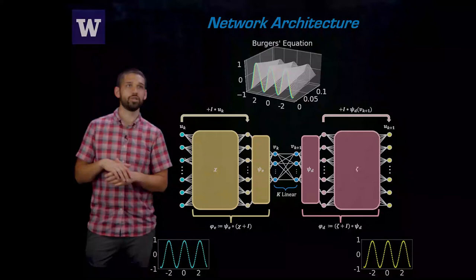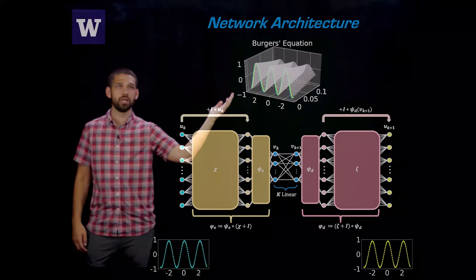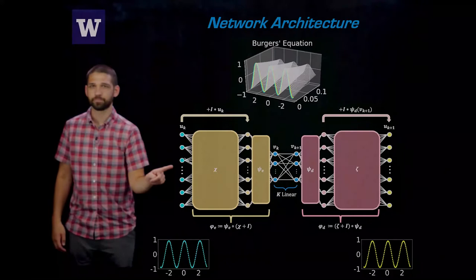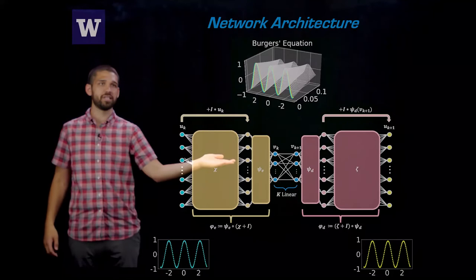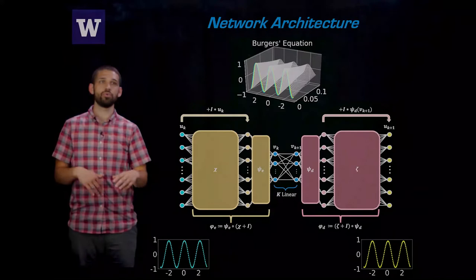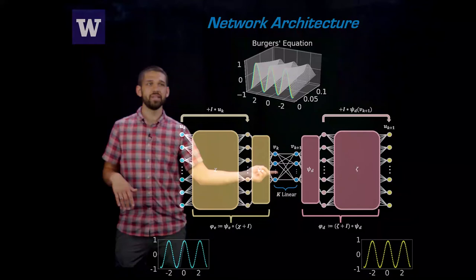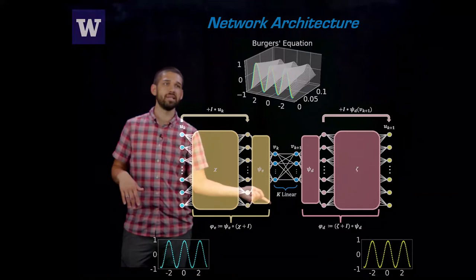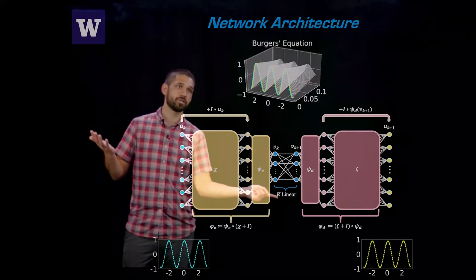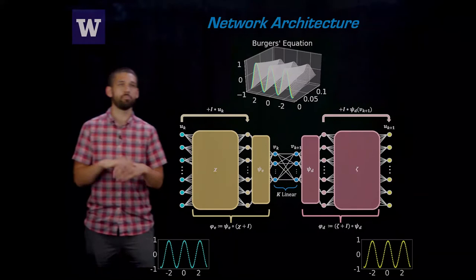So here's our network architecture. What we're going to do is we're going to take some solution to our equation, in this case, Burgers equation. And the initial condition, we discretize it, and that's the input to our neural network. And then for our neural network, we have this autoencoder architecture where we have an encoder here in yellow, and then on the far side there is the decoder. That's going to do our linearizing transformation and the inversion for the decoder. And then when we're in this linear space, we can evolve our system forward in time just using a linear operator. And that means, since we're in a discrete setting, it's just multiplication by a matrix. So we have some matrix that we multiply by and that moves our system forward in time.